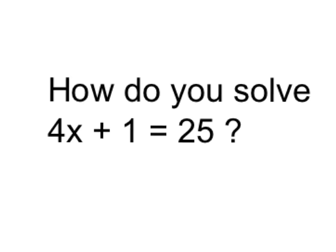In order to solve this two-step equation, we're going to need to get the x by itself, so I'm going to have to get rid of this 1 and get rid of the 4 on the left side of the equation. Let's look at how we're going to do that.